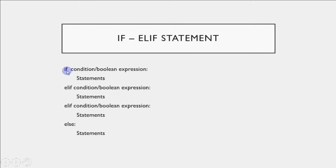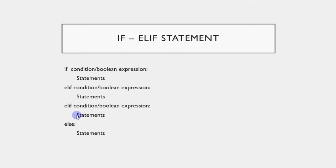What happens is it checks the first condition. If it's true, the statements here are executed and none of the other conditions is checked — it directly comes out. But if the first condition is false, it checks for the second condition, and if this one is true the statements here are executed and we come out. Like this we can have as many elif blocks as we want. At the end we can give an else — it's optional, not mandatory.